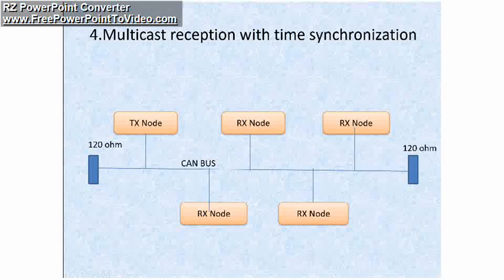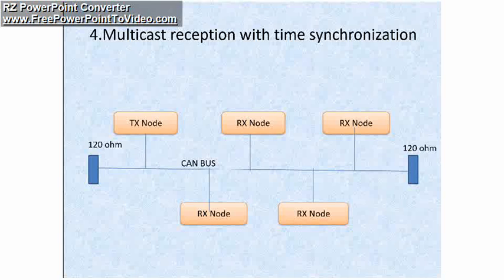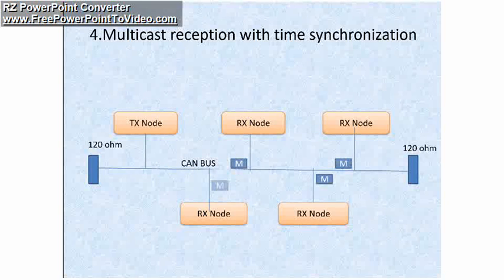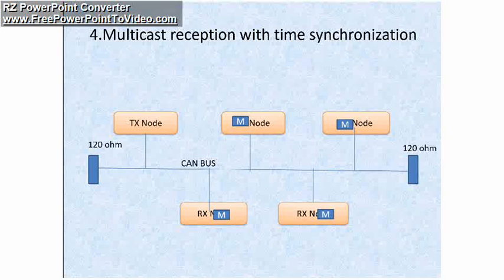The receiving node will receive the message and check whether the message belongs to them or not. If the message belongs to them, they will act on it; otherwise it will be discarded. You can see the same with an example — the TX node broadcasts its message over the network and the receiver acts on the message.